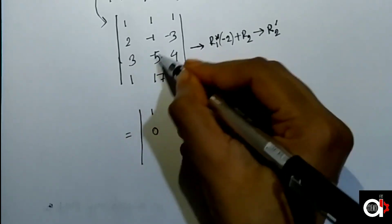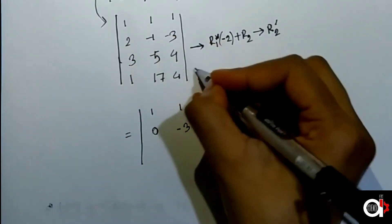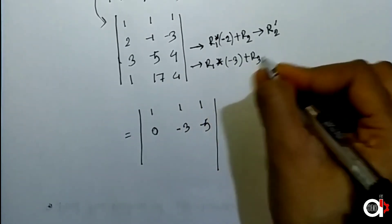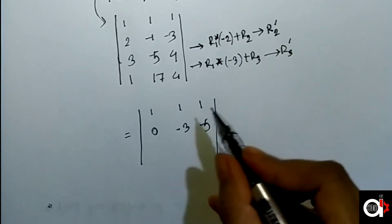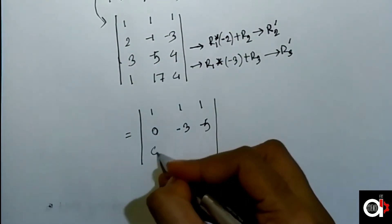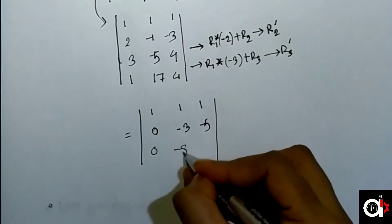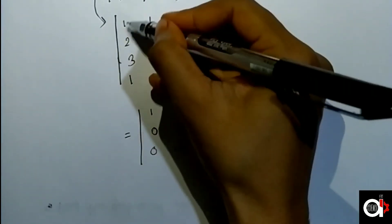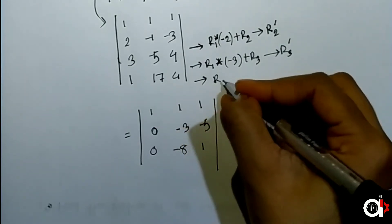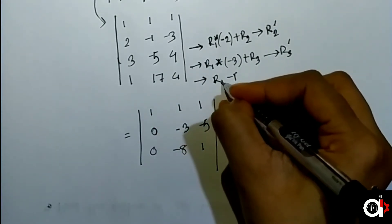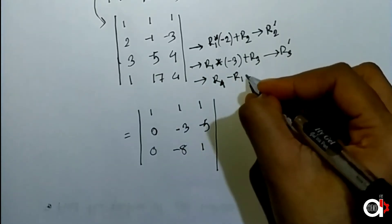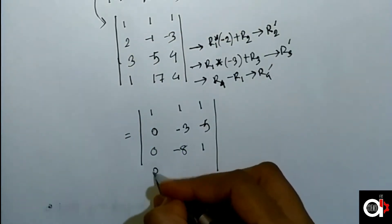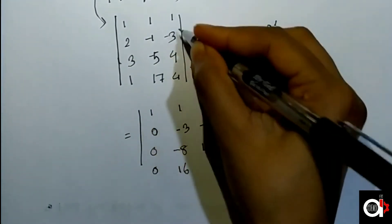For the third row, we apply R3 = minus 3 times R1 plus R3, giving: minus 3 plus 3 equals 0; minus 3, minus 5, minus 8; minus 3, minus 4, minus 1. For the last row, we apply R4 minus R1: 1 minus 1 equals 0; 17 minus 1 equals 16; 4 minus 1 equals 3.